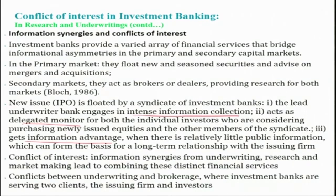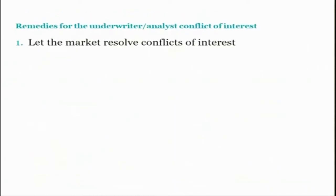Because of this, there is a kind of conflict of interest. Information synergies from underwriting, research, and market making lead to combining these distinct financial services. The conflict between underwriting and brokerage arises where investment banks are serving two clients — the issuing firm and investors.